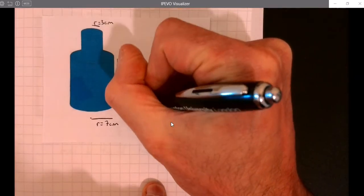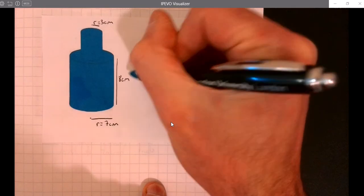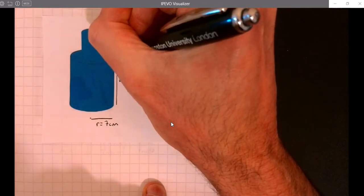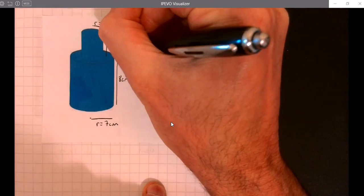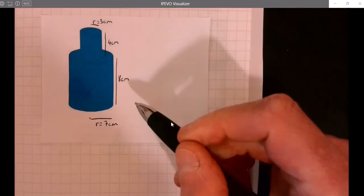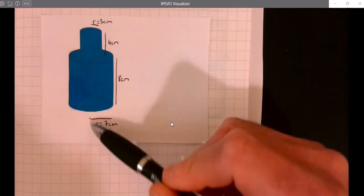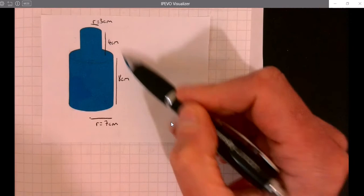I need to tell you that distance, we'll say that's 8 centimeters, and then I need to tell you that distance just there, we'll say that's 4 centimeters. Let's think about all the bits that make up this solid.